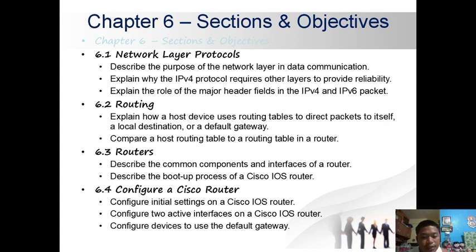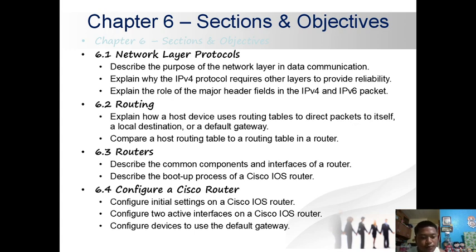Section 6.3 Routers: describe the common components and interfaces of a router, describe the boot up process of a Cisco IOS router. Section 6.4 Configure a Cisco Router: configure initial settings on a Cisco IOS router, configure two active interfaces on a Cisco IOS router, and configure devices to use the default gateway.